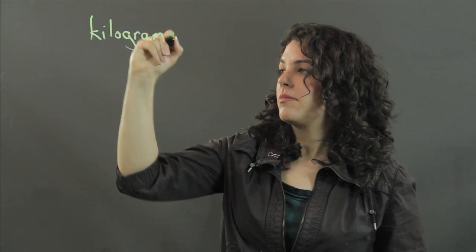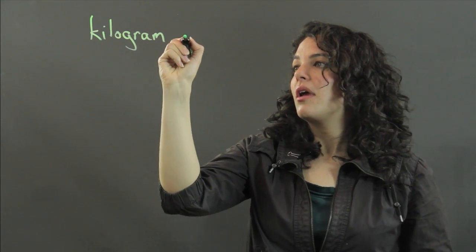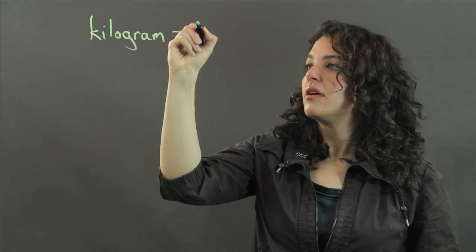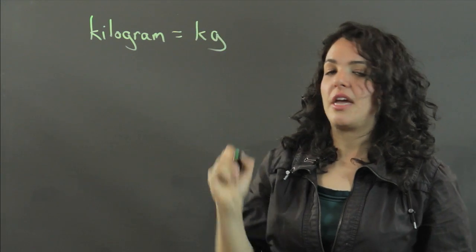Gram is a unit of mass, and the SI unit that we use is the kilogram, and we can abbreviate it as kg.